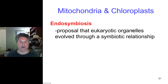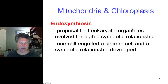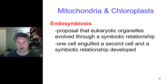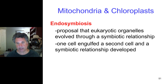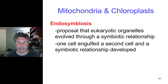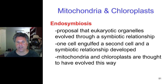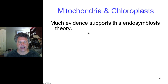Endosymbiosis proposes that eukaryotic organelles evolved through a symbiotic relationship, where one cell engulfed a second cell. We don't know what the first cell was trying to do — it might have been trying to eat it or something else entirely. The evidence for the origin of mitochondria and chloroplasts as endosymbionts inside another cell is quite strong; mitochondria and chloroplasts were once free-living bacteria.